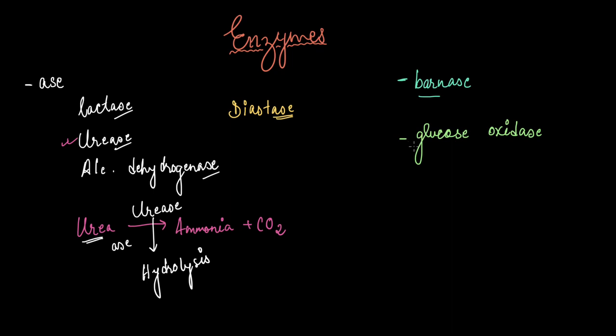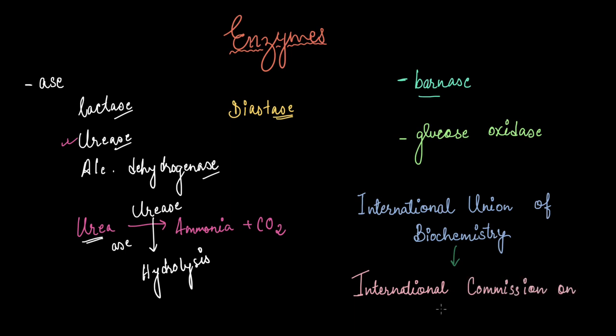Scientists felt the need for some method to classify and name enzymes. A group of scientists approached the International Union of Biochemistry, and this union finally established the International Commission on Enzymes to tackle the problem. This commission finally classified all the enzymes discovered till then into six different classes.